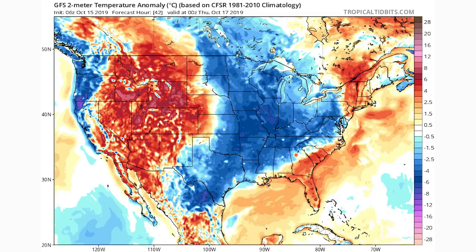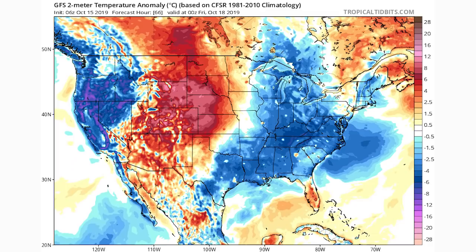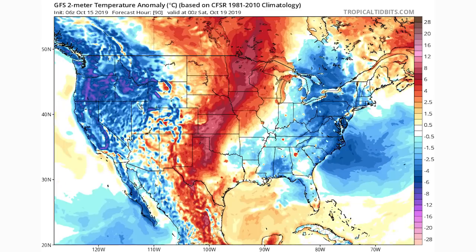Thursday October 17th: colder than normal conditions enter the eastern United States while warmer conditions move into the western US. The southeast immediate coast and New England are still above average, but otherwise the eastern US is below average. Friday October 18th is a similar story, with a ridge building in the central US moving further east, while the west coast and Pacific Northwest are below average, and areas east of the Mississippi remain below normal. Saturday October 19th: very similar — cold in the west, cold in the east, warm in the central US.